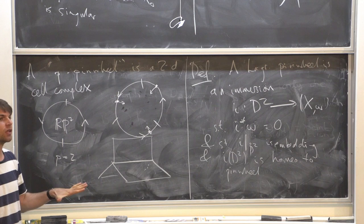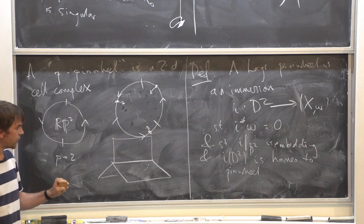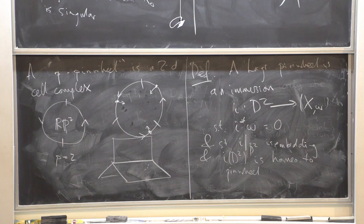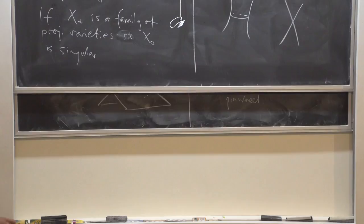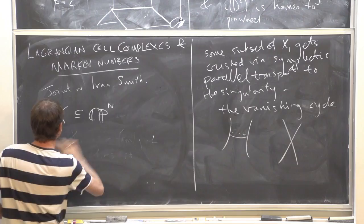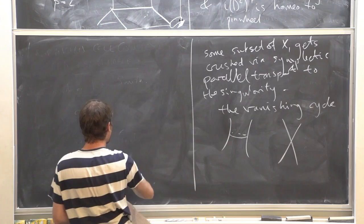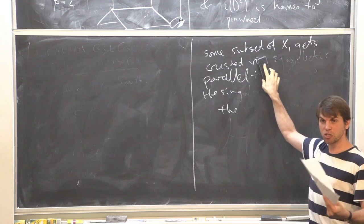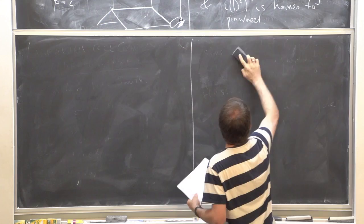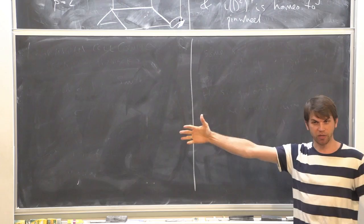Is it equivalent to say this is a continuous map on the pinwheel itself? Yes, certainly — but in particular I want it to be a smooth immersion on the interior of the disc so I can talk about the Lagrangian property. This is the Lagrangian we're interested in — I claim it's the vanishing cycle of some singularity. It's going to be a singularity of a complex algebraic surface. There are many singularities in higher dimensions with interesting vanishing cycles too, but I want to focus on this one.